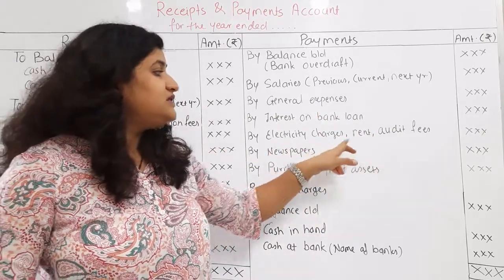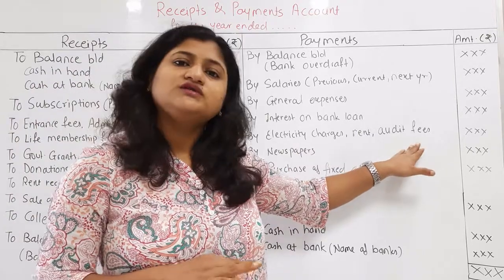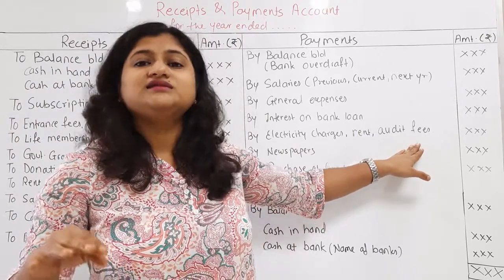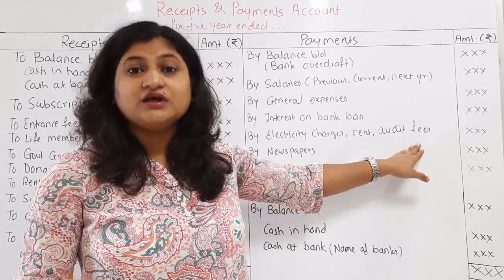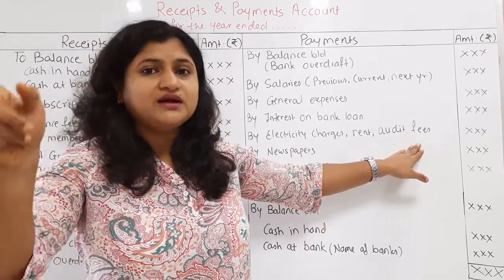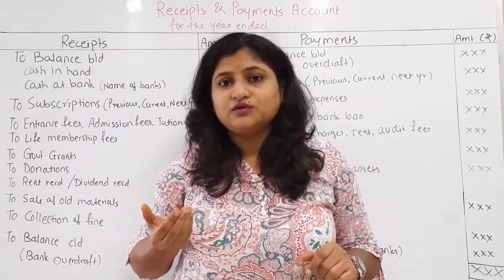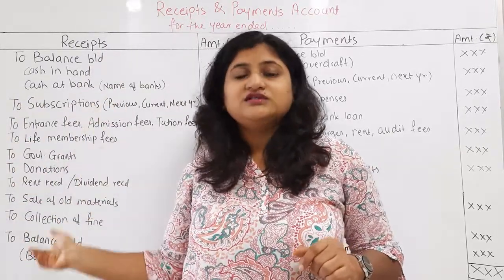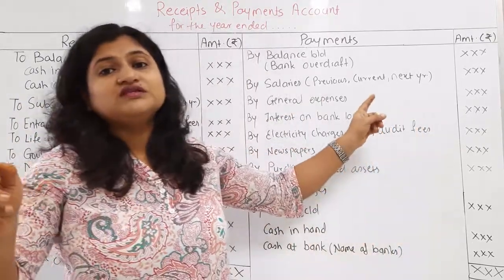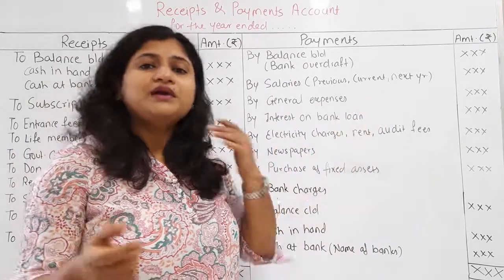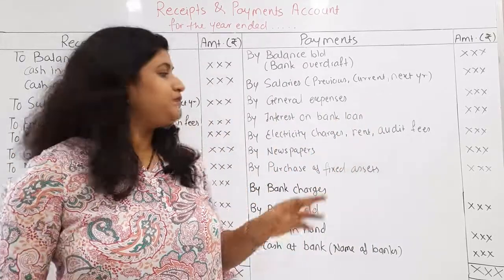Next: electricity charges, rent, audit fees. These are various types of charges and fees. Rent is something we can receive, so it goes under receipts. Audit fees and similar items we pay out, so they go on the payment side.